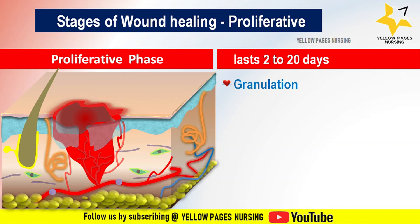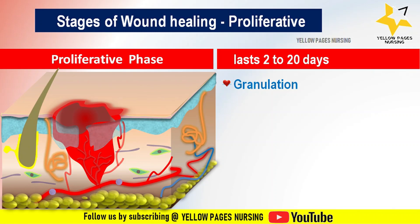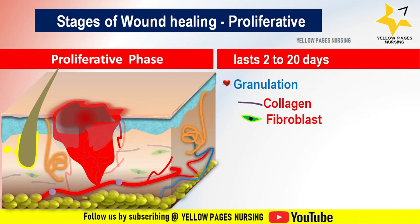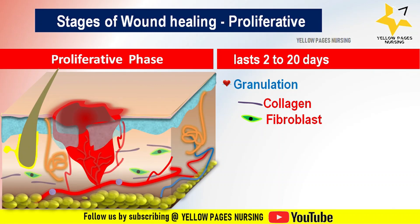In the proliferative phase, granulation occurs — granulation tissue is a new connective tissue and blood vessels that form on the surface of a wound. Granulation is driven by collagen produced by specialized cells called fibroblasts. This granulation tissue appears pink or red in color.